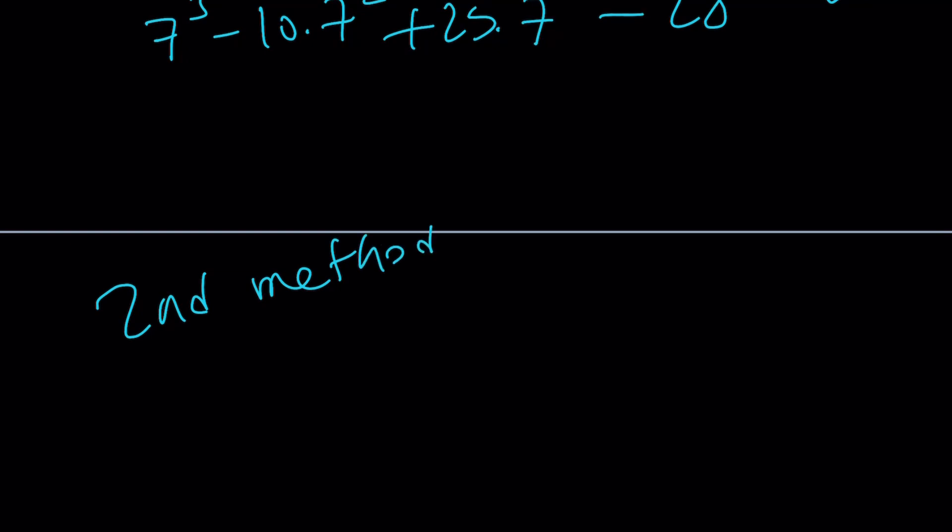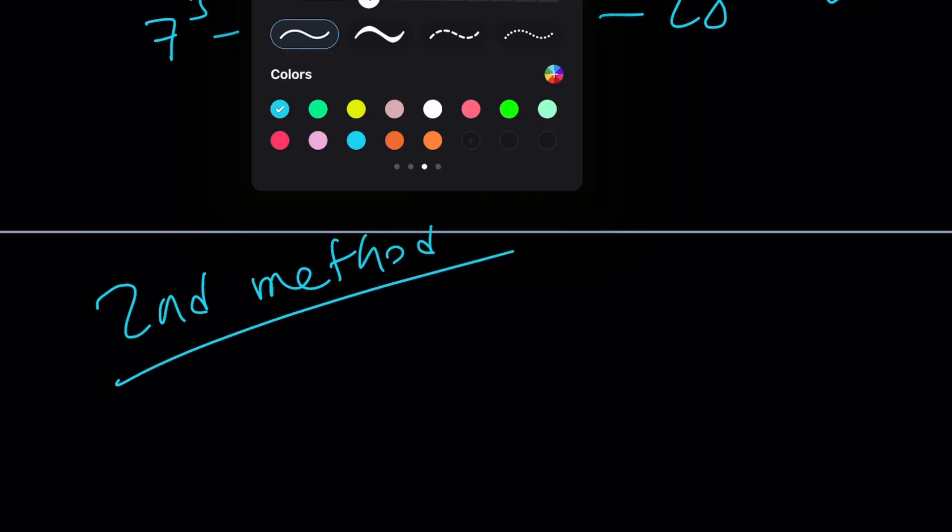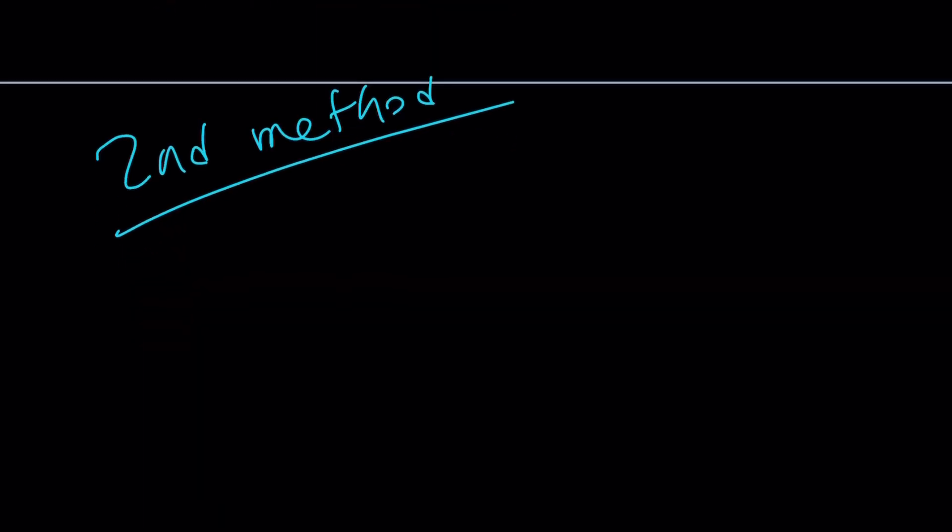Obviously, the second method is going to be nicer. Let's take a look. We have the cube root of x plus 1 equals the square root of x minus 3. Here's what we're going to do: we're going to set both of these equal to something, how about using a different variable like t?